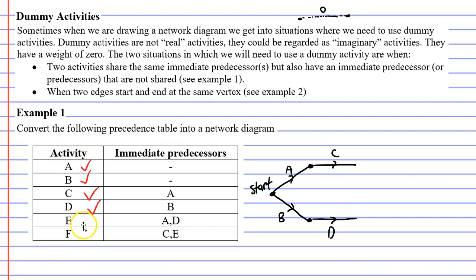When we get to activity E, this is where we start seeing some problems here. Activity E needs to follow on from both activities A and D. Now to make activity E follow activity D is not a problem at all. That's quite simple. It would be like so. But it needs to follow on from activity A as well, and activity A finishes all the way up here.